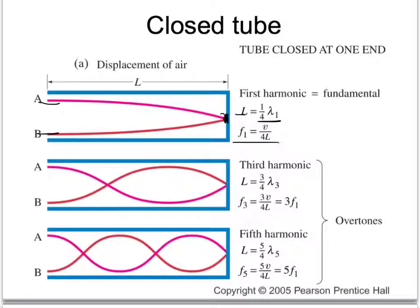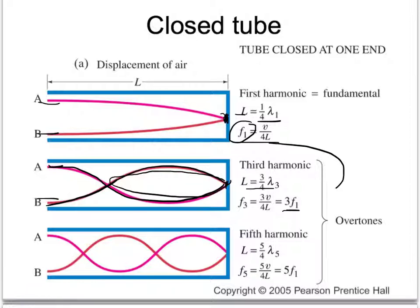If we solve for frequency we get this, which we use to compare how much the other harmonics are. We actually have to skip straight to the third harmonic. In order to maintain a node at one end and an anti-node at the other, we insert a half wavelength — a football. That gives us three fourths of a wavelength: one half plus one fourth. Solving for frequency gives us three times the first frequency. To preserve the convention where the harmonic number equals how many times the fundamental frequency, this is the third harmonic.